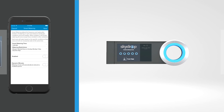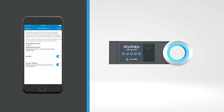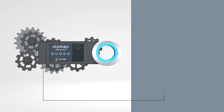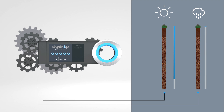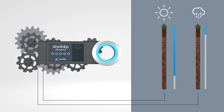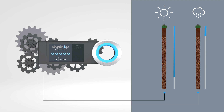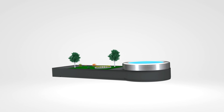Although the SkyDrop controller is totally customizable, by enabling smart watering and dynamic minutes, you can take full advantage of SkyDrop's intelligent algorithms. These algorithms automatically adjust your watering schedule and duration based on your local weather data, saving water and increasing the health of your landscape.